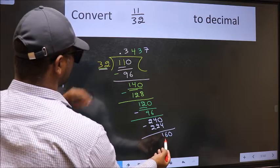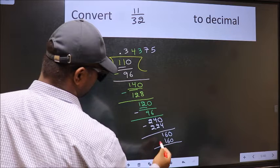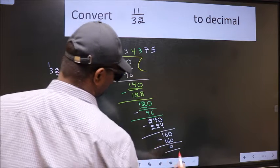When do we get 160 in 32 table? 32 5s, 160. Now, we should subtract. We got 0.